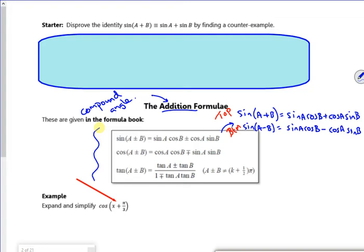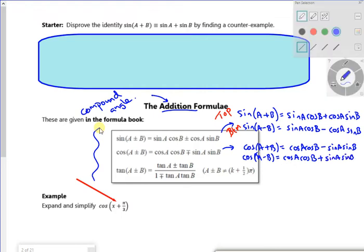And it's the same with cos A, cos B. So if I look along the top for this one, I've got cos(A + B) = cos A cos B - sin A sin B, and cos(A - B) = cos A cos B + sin A sin B. So same idea, top and bottom.